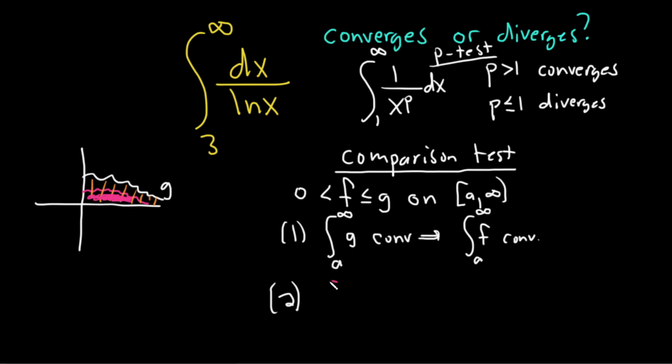Conversely, if f, so if the integral of f diverges, it means it doesn't have a finite area, well, g is bigger. So if g is bigger than f and f doesn't have a finite area, then g also does not have a finite area. So this also diverges.